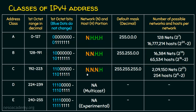In a Class C IP address, the first three octets represent the network portion, and the last octet is the host portion. The default subnet mask is 255.255.255.0. When the first three octets are fixed, only one octet is left for the host portion, so we have many networks but only a limited number of hosts per network.